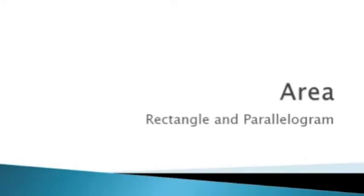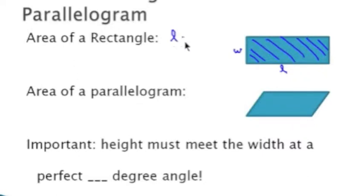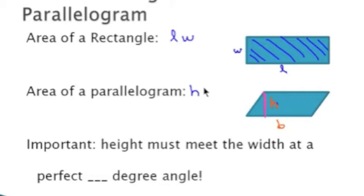In this video we are going to look at how we can find the area of a rectangle and a parallelogram. Rectangles have a width and a length, and we calculate the area by multiplying length times width. A parallelogram is very similar — if you cut the parallelogram on the side and move that triangle to the other side, it fits like a puzzle piece forming a rectangle. So we multiply the height times the base to get the area of the parallelogram.